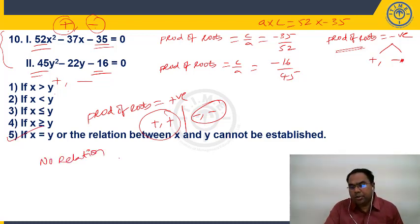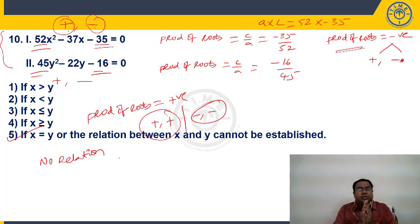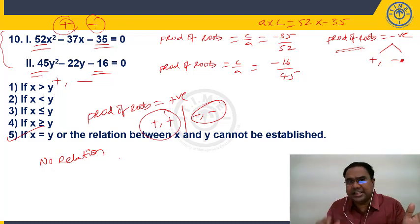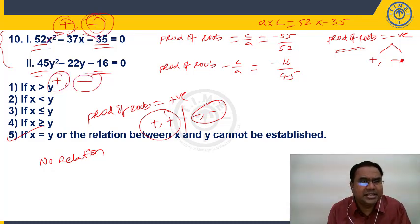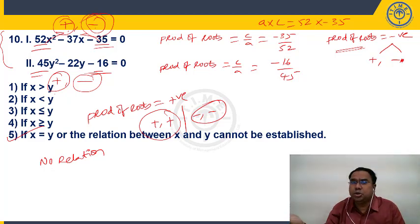To clarify: if the product of two roots is positive, both roots are positive or both are negative — you'd need the sum of roots to determine further. But here, product of roots is negative in both equations, meaning one root is positive and the other is negative in each. So comparing a positive X root with a negative Y root gives X greater, but comparing negative X root with positive Y root gives X less. Therefore, no definite relationship can be established.